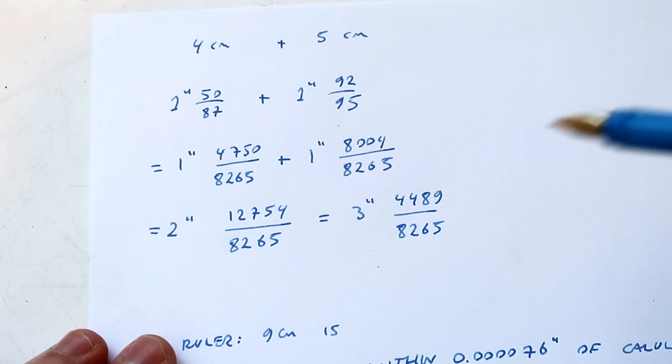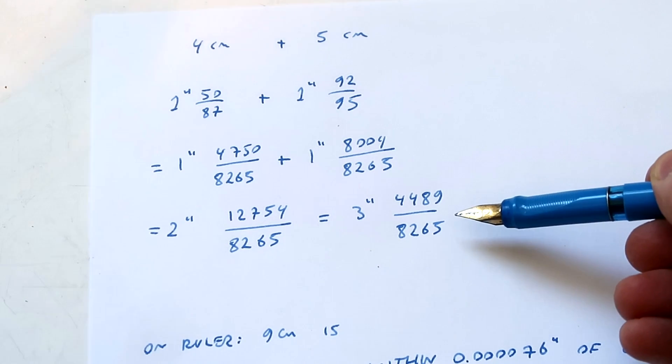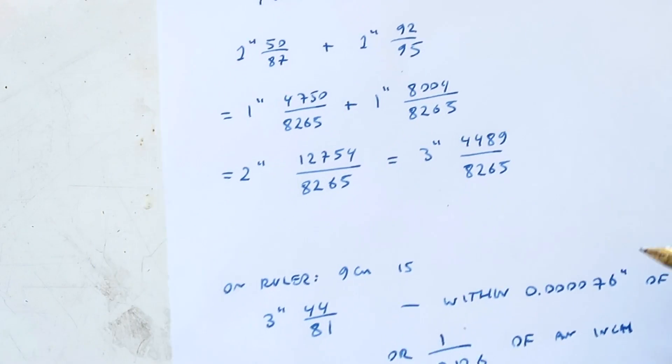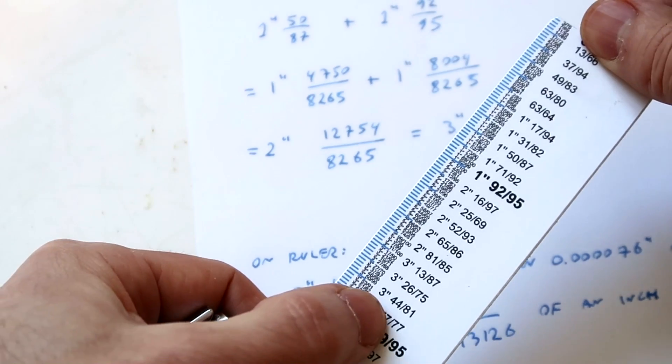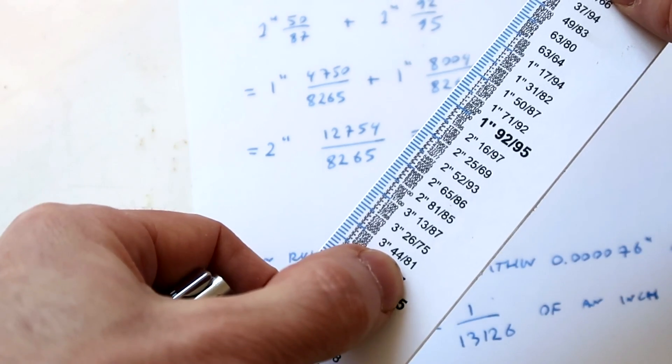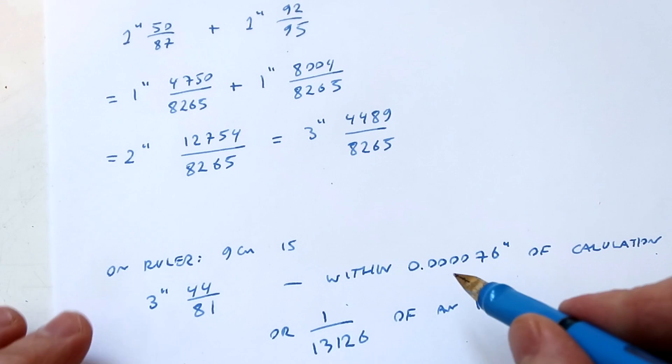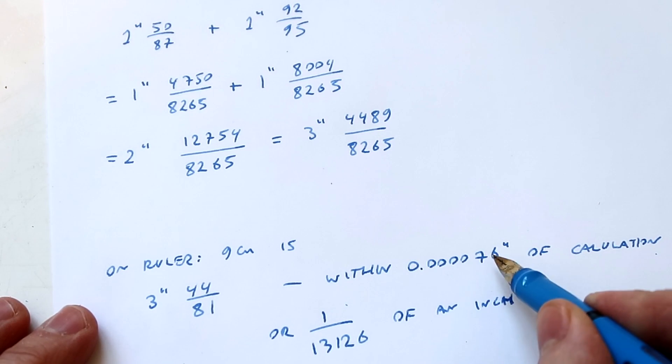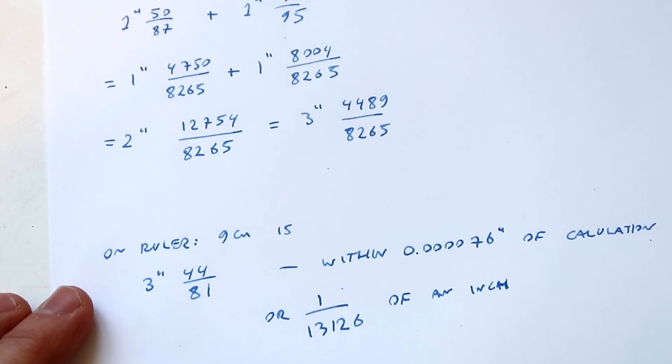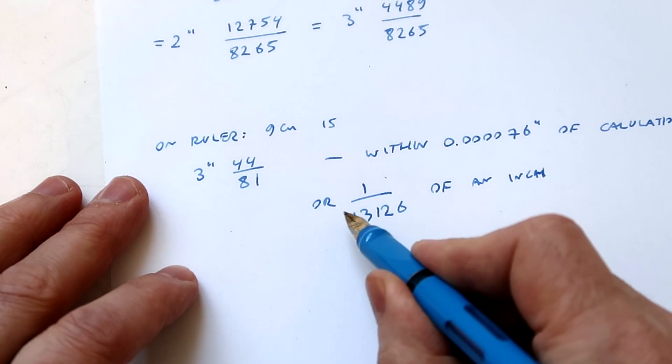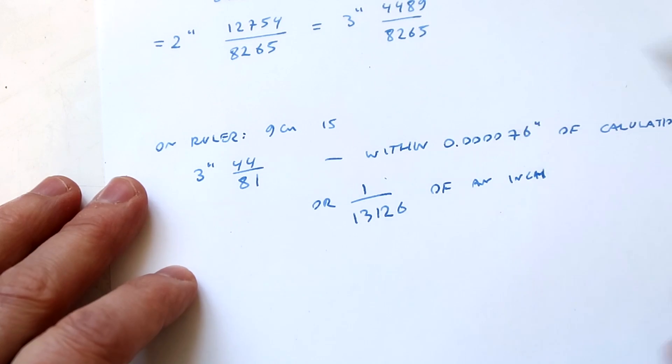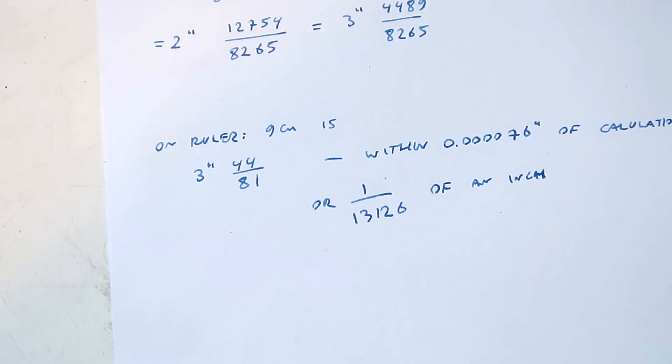Now that is quite precise without being completely bang on because inches aren't really about being bang on. So on the ruler that would be nine centimeters which is three inches 44/81 and the difference between those two is 0.000076 of an inch. But that's kind of cheating because that's using decimal. So it's 1/13126 of an inch off. Really close.